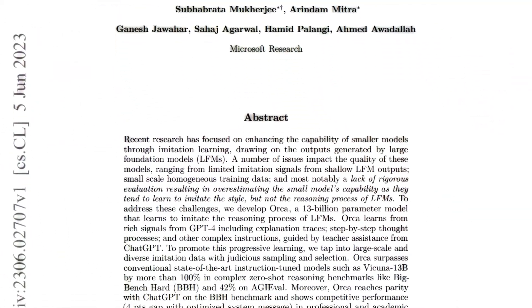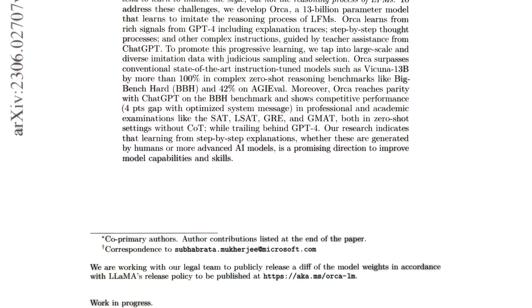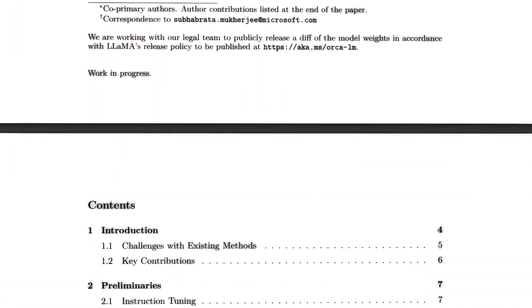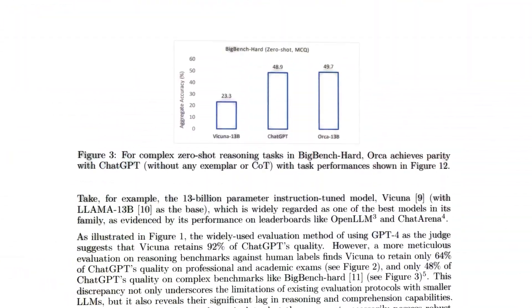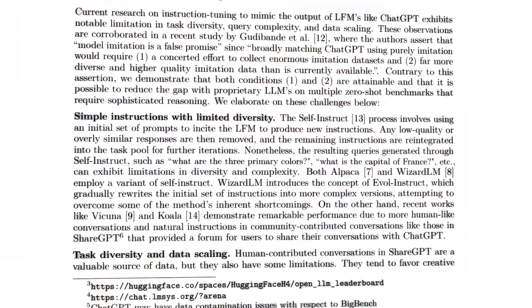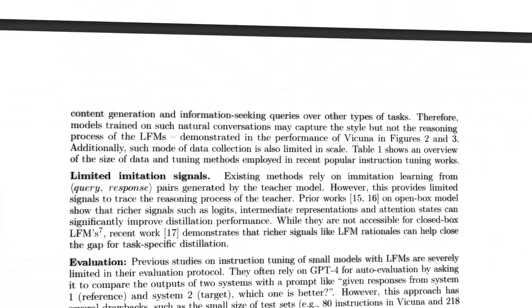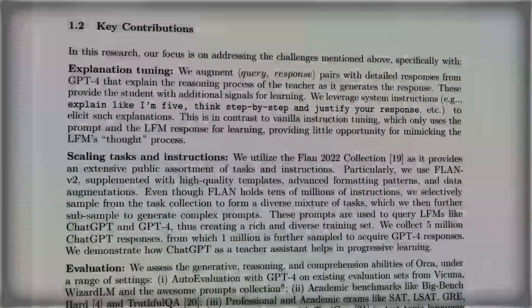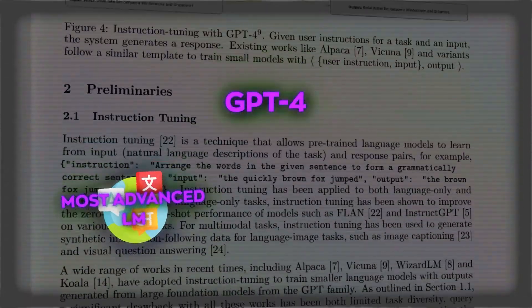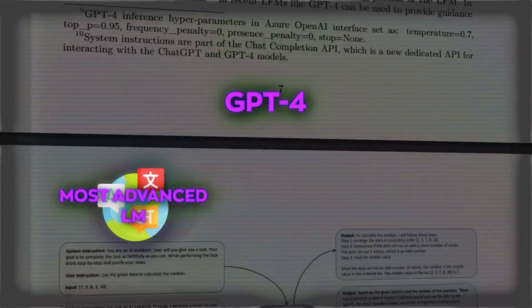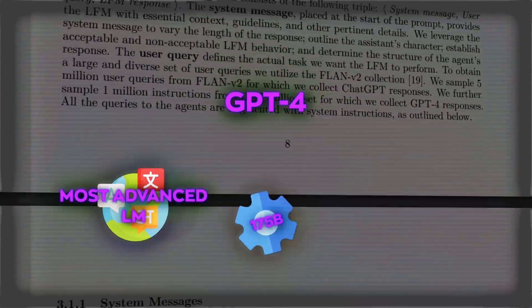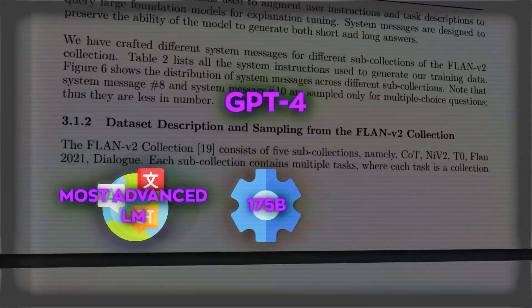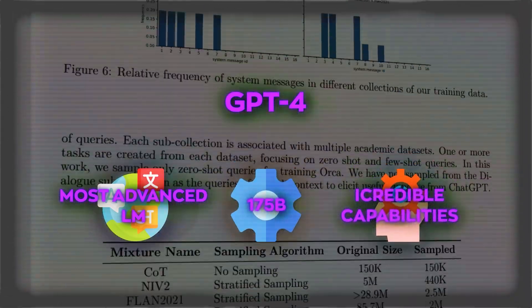In this paper, Microsoft researchers showed how they trained a small model called Orca by imitating the outputs and explanations of a large foundation model like GPT-4, which is one of the most advanced language models in the world, with 175 billion parameters and incredible capabilities.